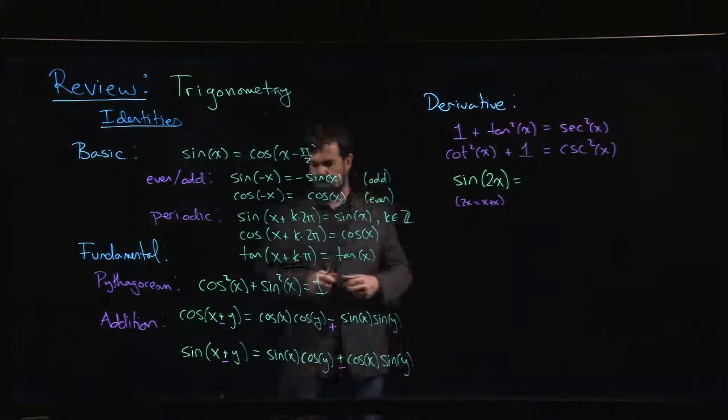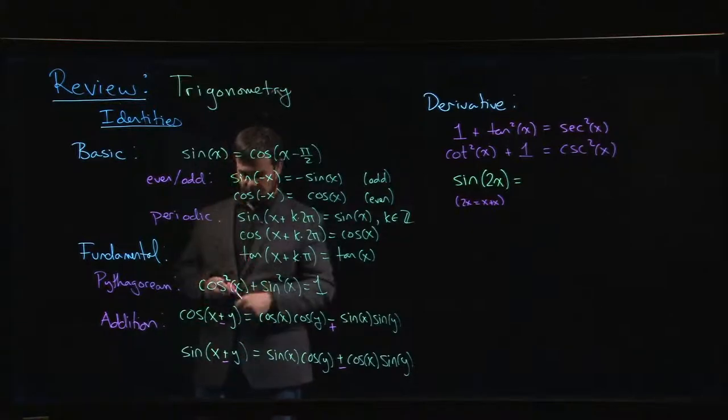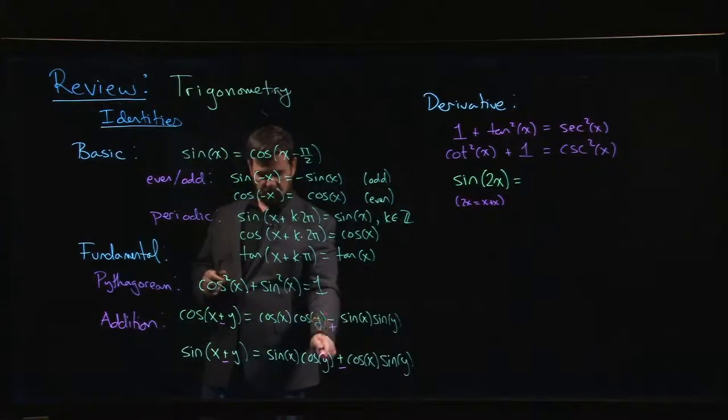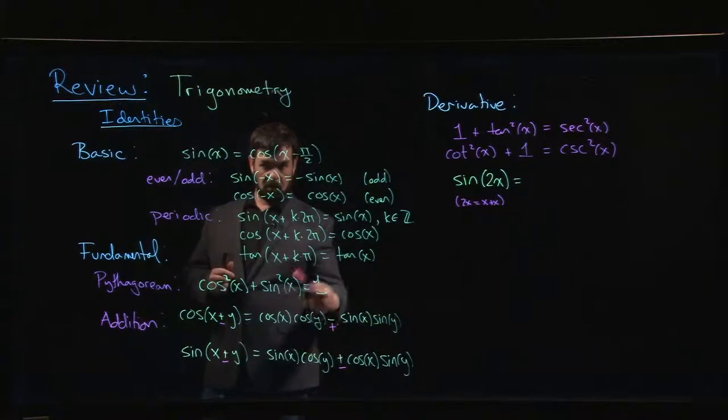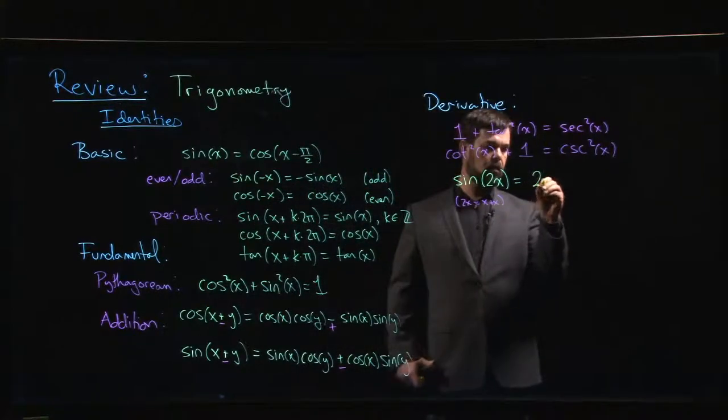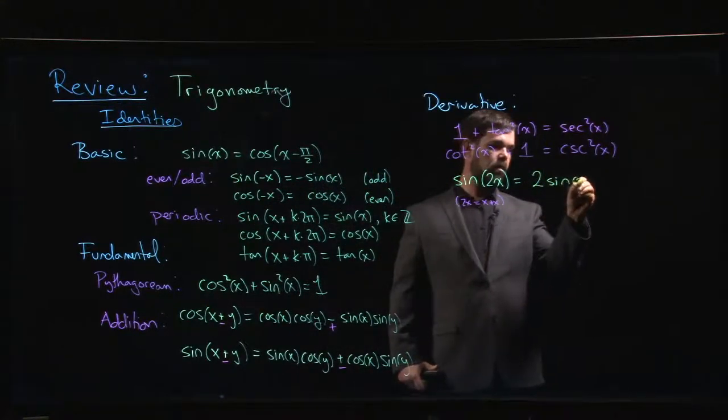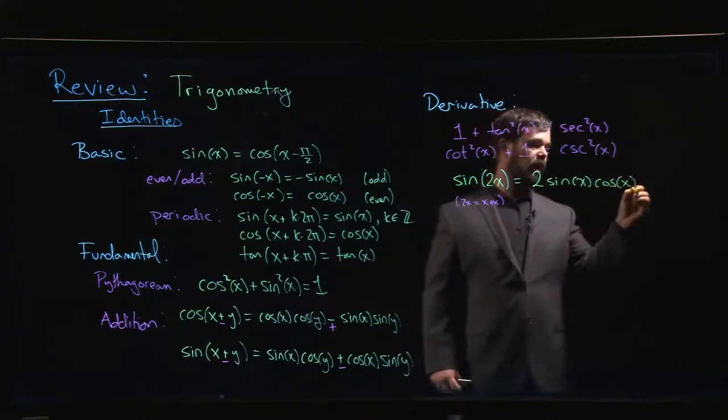So if you put x equal to y in the identity for sine of x plus y, you're going to get sine x cos x plus cos x sine x. So you just get sine x times cos x twice. So what you get is 2 sine x cos x.